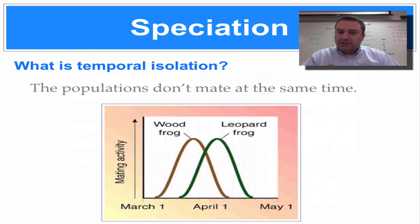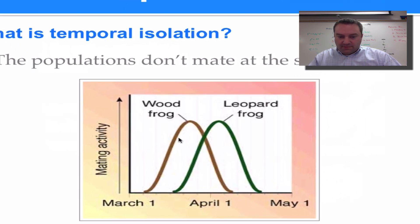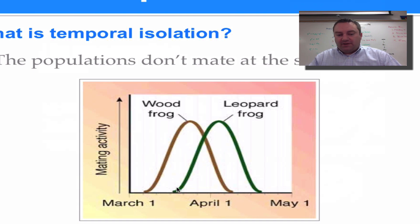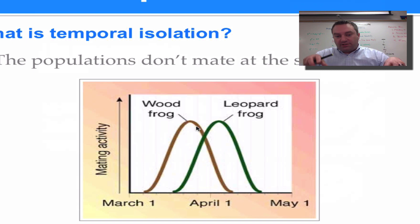Temporal isolation deals with the time of day, month, or year when a species enters its mating season. For example, the wood frog mates in the second or third week of March, while its close relative the leopard frog mates about three to four weeks later — around mid-April. Because the peak of mating is a month apart, these two frogs will not mate with each other, their gene pools stay separate, and that's how they become separate species.